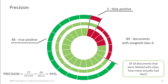Now we can see what precision is. The third circle shows us how precision is counted. We take into account the true positive results — documents that had to be classified as A and were classified correctly, indicated in dark green — and false positive results, documents that needed to stay unknown but were classified as A. So precision is the percentage of documents that were correctly classified as class A relative to all documents that were assigned the reference class A.